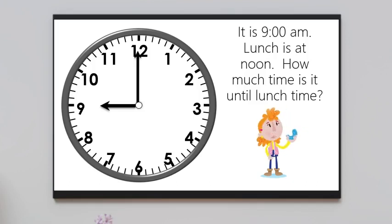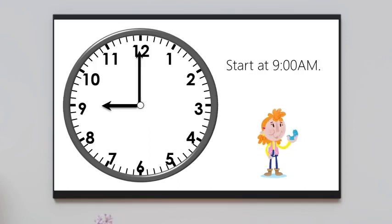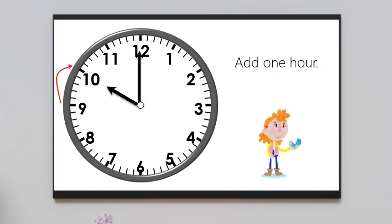Let's look at an example. It is 9 o'clock a.m. Lunch is at noon. How much time is it until lunch time? You want to start at 9 a.m. on the clock. Next, add one hour. Now it's 10 o'clock.